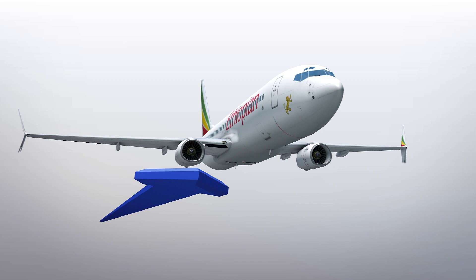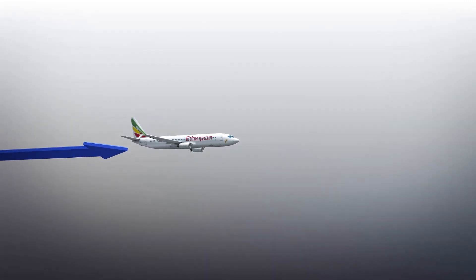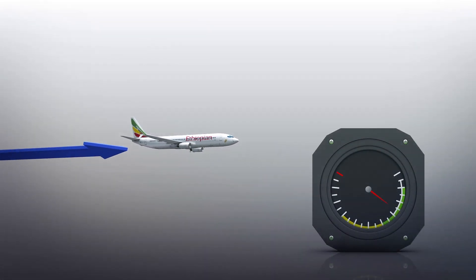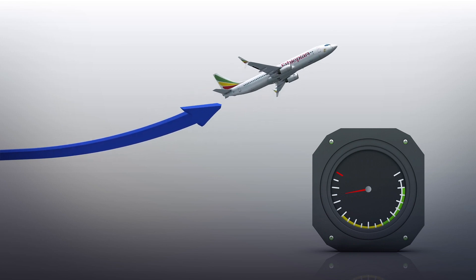The airspeed continued to increase to over 300 knots at under 1,000 feet above the ground. After that 30-second period, the plane began to climb normally, until it disappeared from radar.